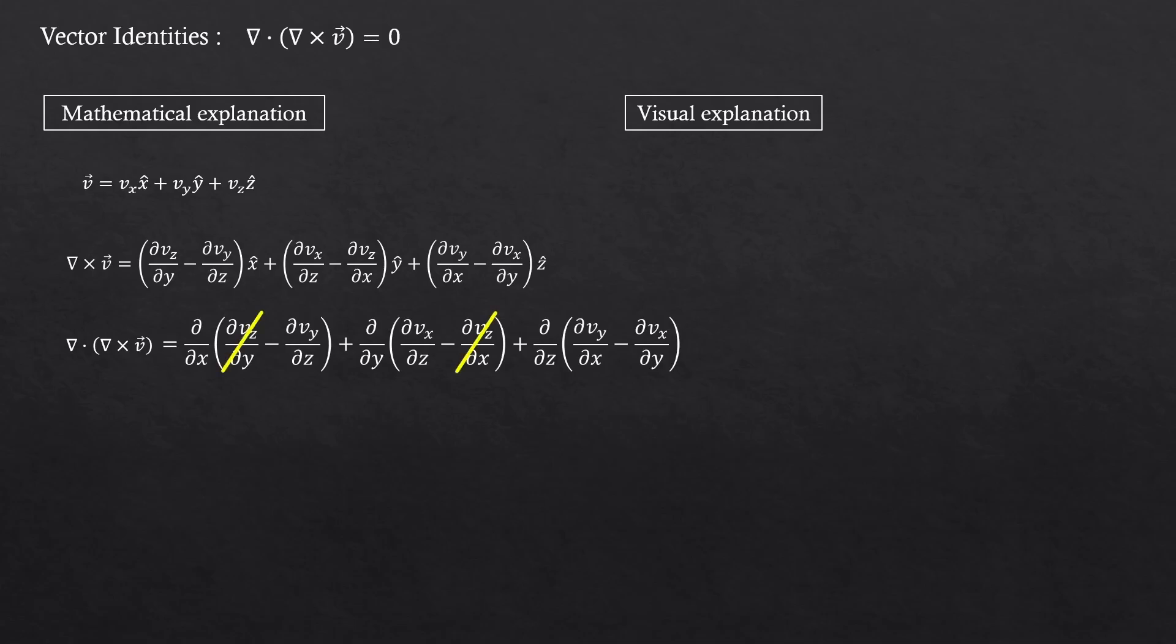You see? This and this cancel. This and this cancel. And this and this cancel. So we get zero. It's very similar to our first vector identity, but in the first identity, the x, y, and z components each canceled out within their own parts. But here, everything is mixed and cross-canceled. And that's totally fine. Because in this case, the equation isn't separated into the x, y, z components.